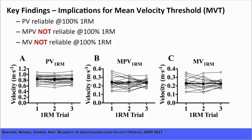This figure shows the individual and group mean results for the three velocities at 1RM between the three 1RM trials. As you can see, the group mean results were almost exactly the same for each velocity between trials. But for MPV and MV, there was huge variation for individuals between trials — even though the 1RM for each participant was extremely stable, with about 2.5% variation between sessions. This shows the importance of reporting individual data as well as group mean results.